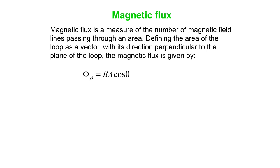The Greek letter capital phi with a B is the magnetic flux. It equals the magnitude of the field times the magnitude of the area vector multiplied by the cosine of the angle between the field and the area vector. Again, don't forget that the area vector is perpendicular to the plane of the loop.